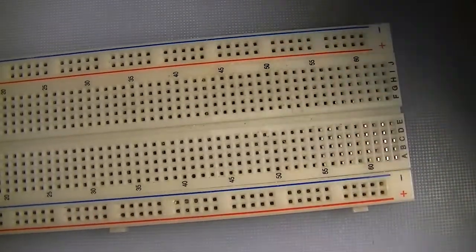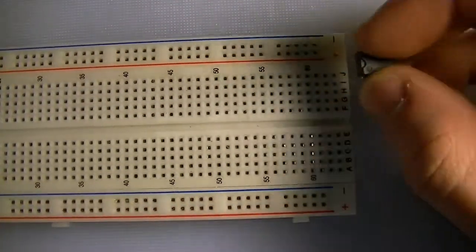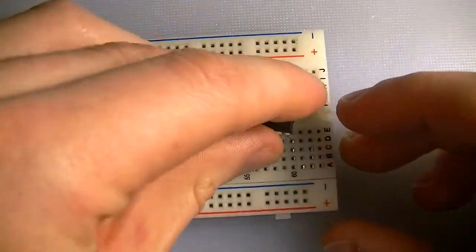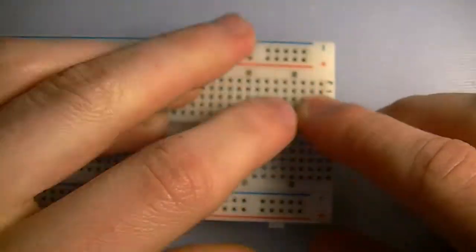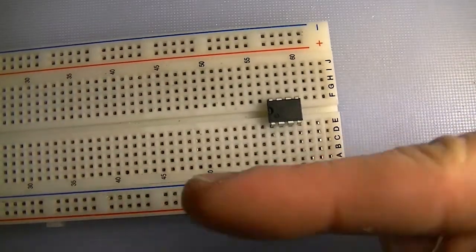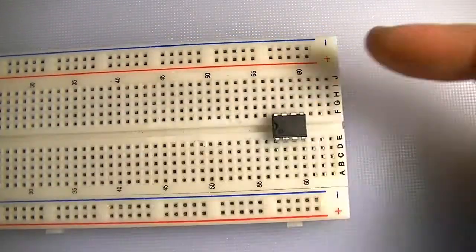Okay, let's begin. So here's my 555 timer. I'm just going to put it three spaces from the edge of the board here, and make it face that way so the notch is facing that way.